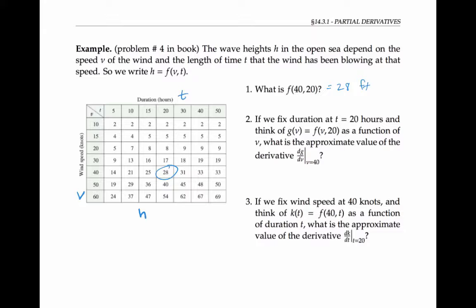Fixing the duration at 20 hours means we're reading down this column. So we want the rate of change of the numbers in this column as v varies. So for example, we can look at these two numbers and look at delta g delta v.